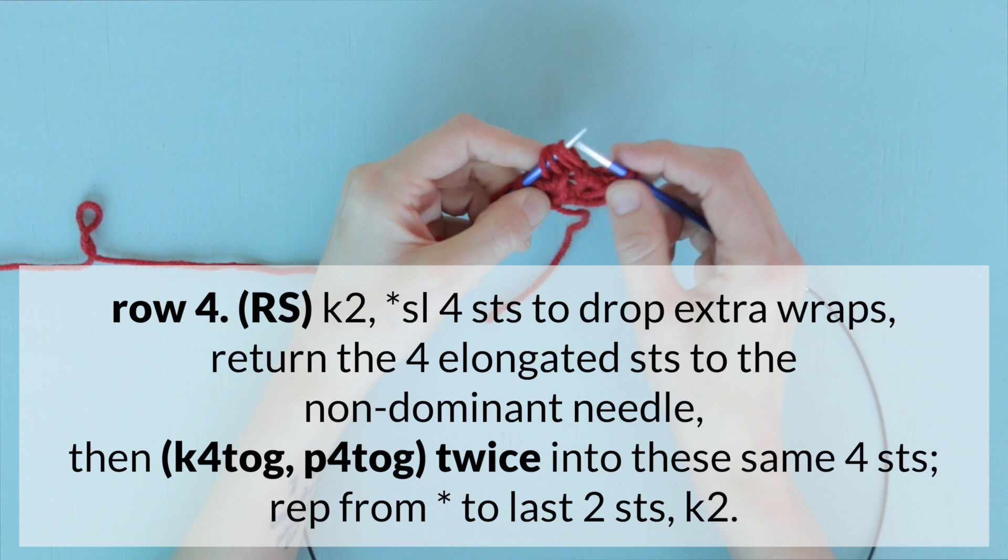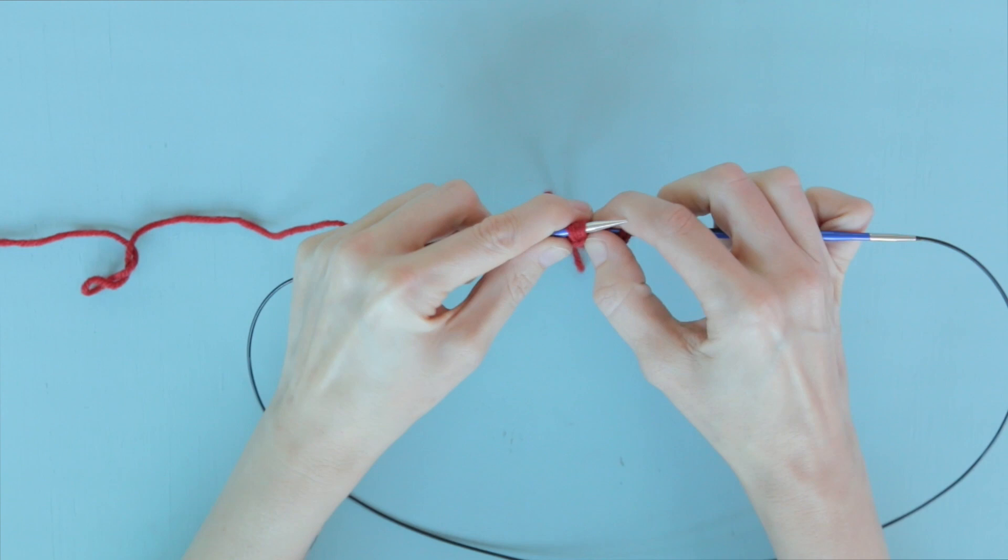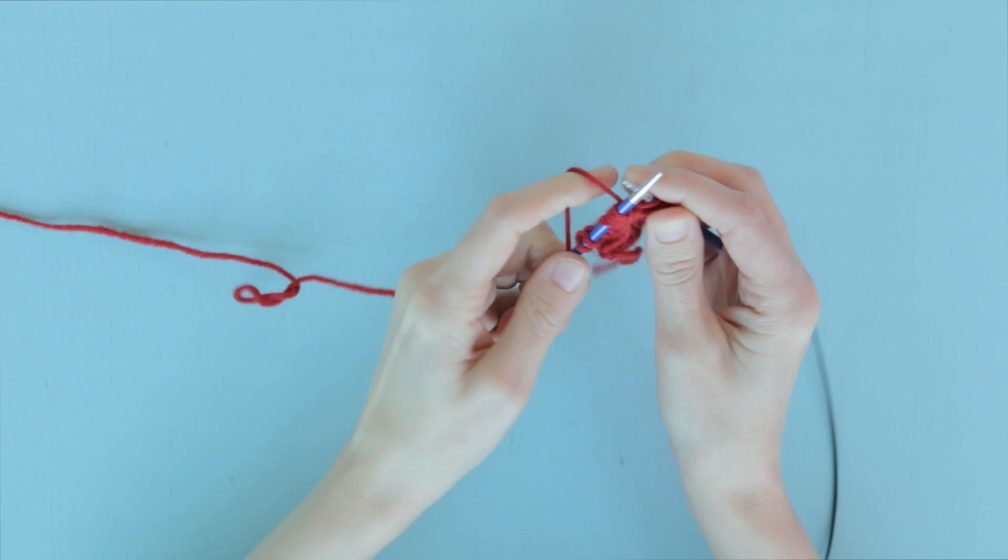Then we are going to knit four together, purl four together in the same four loops, and then knit four together, purl four together one more time to finish that out.